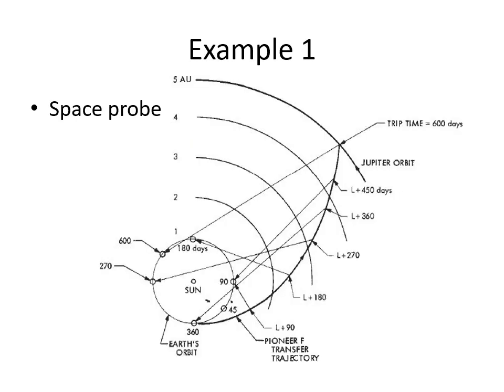A good example of a deterministic system is orbits. Here is the orbit of Earth about the Sun, and this is the orbit of Jupiter. Let's say we want to send a space probe from the Earth to Jupiter. We have deterministic models that allow us to predict where Jupiter will be at any time in the future and where the Earth will be, allowing us to compute the correct launch window, the initial direction of launch, and the amount of thrust needed to get a trajectory that will intercept Jupiter at a later time.